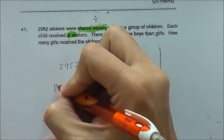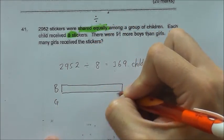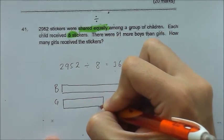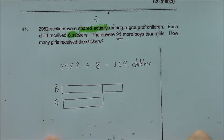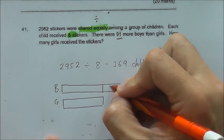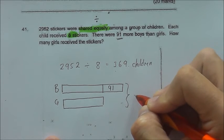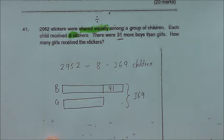So for boys, you will have a longer unit. Girls, a shorter one. And the difference will be 91, because 91 more boys than girls. And the total boys and girls down here will be 369.